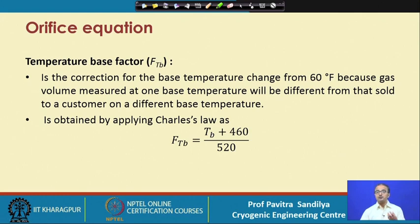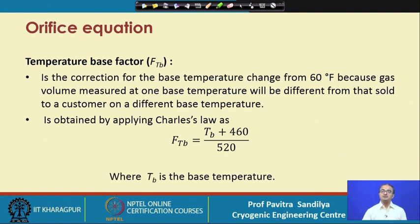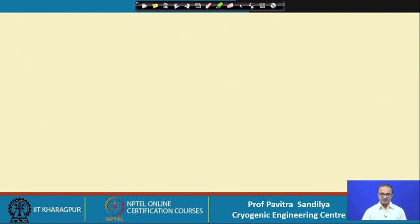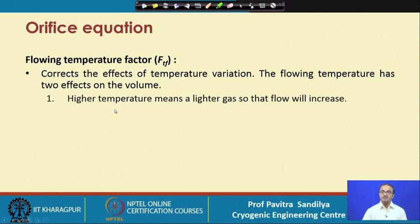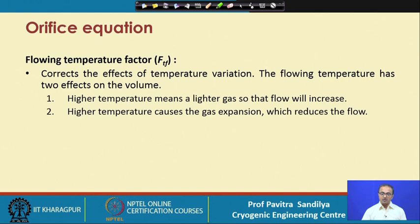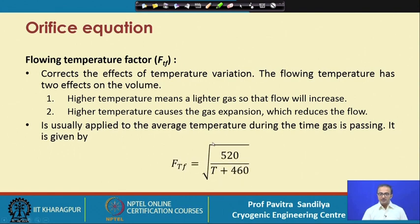Values in the literature are given in the FPS system, so tables are also in FPS — we can later convert units. The flow temperature factor corrects for temperature variation and has two effects: at high temperature the gas becomes lighter, tending to increase flow, but high temperature also causes gas expansion, which reduces flow. This factor is applied to the average temperature during the time gas is passing.